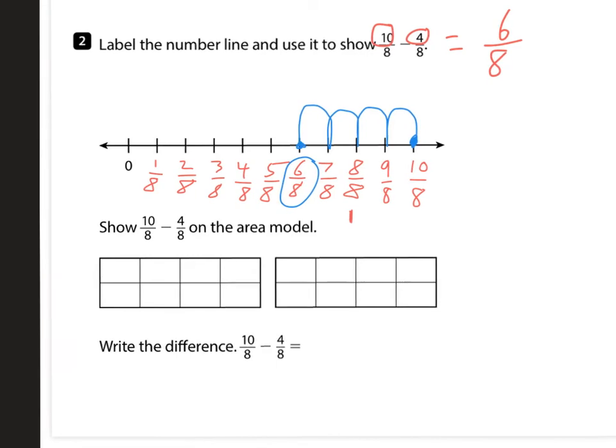The next one, show 10 eighths minus 4 eighths on the area model. So we have an area model here. Everything is, this first hole is split into eighths because our denominator is eighth. I'm going to go ahead and shade in 10 eighths. That's 8, 9, 10.